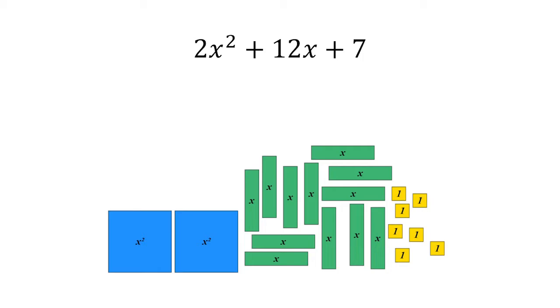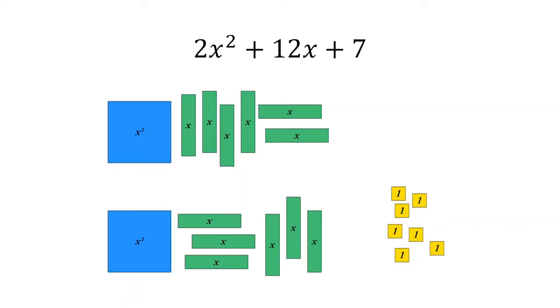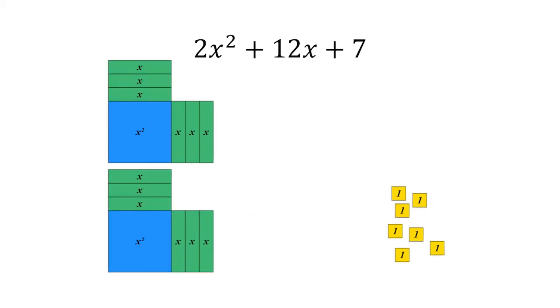The solution is we're going to build two squares. What they can quickly gather is that the 12x's will go between the two blue squares to create two squares. Each will have six, and those six will be plus three to the right and three above to form partially completed squares.